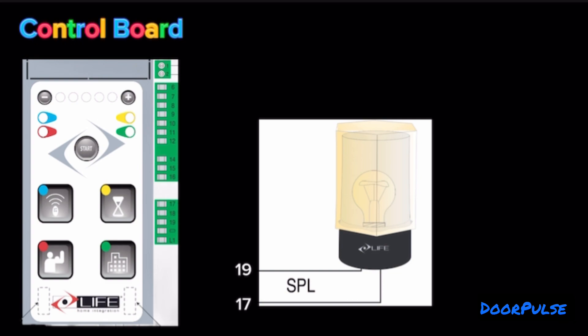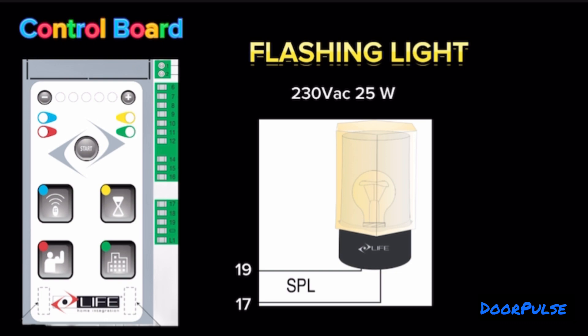Terminals 19 and 17: Flashing Light. Up to 230V AC 25 Watt Max output for connecting a Splendor SRL flashing light.